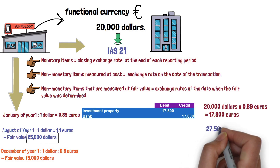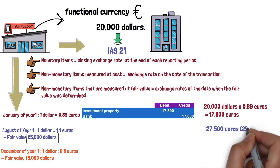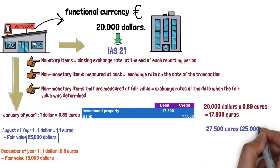In this way, we must convert 25,000 dollars at a rate of 1.1 euro. So, it will be necessary to recognize an increase in the fair value of 9,700 resulting from the following operation.